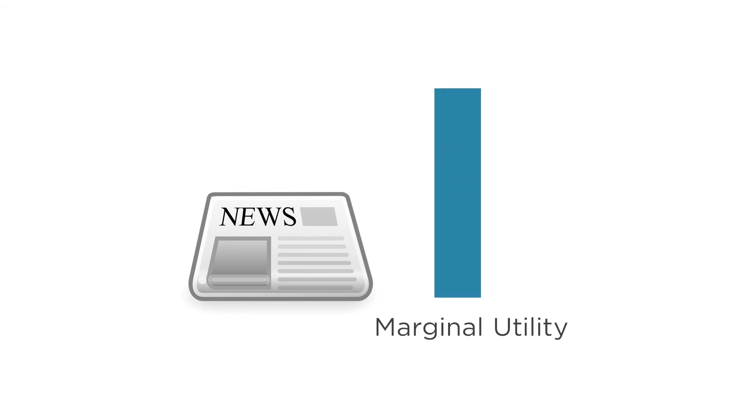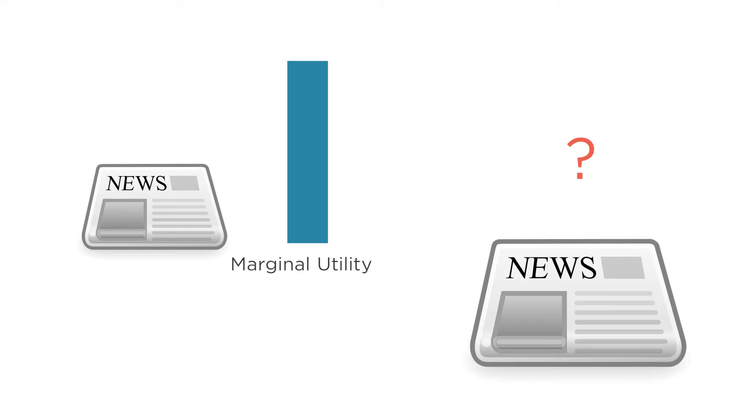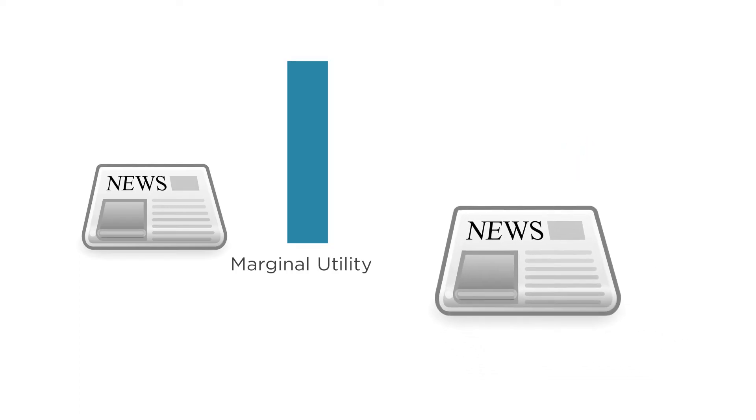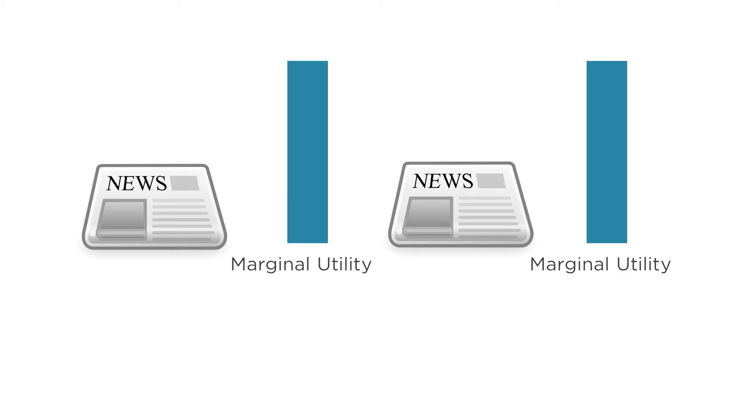Of course, the marginal utility for different goods will look different. Let's think about socks and newspapers for a second. That's not a sentence I'd normally say. But anyway, what's the marginal utility of today's newspaper? It can be useful to buy a newspaper if you like reading the news or need to pass the time. But would you ever buy a second copy for yourself? Probably not. The marginal utility for today's newspaper drops pretty fast. Once you've read the news once, there's not much value in getting a second copy.